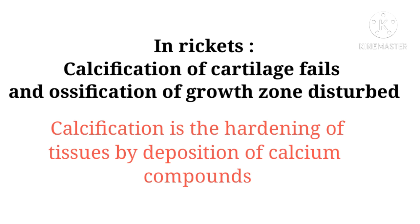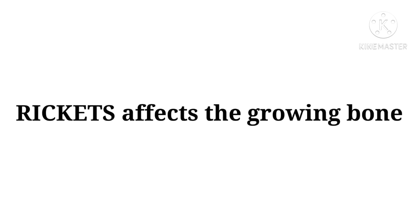The next point is that ossification of the growth zone is disturbed. When there is no calcification — no deposition of any kind of mineral — the growth of that part of cartilage which doesn't have any calcium or material is disturbed. There is no growth. Ricketts affects the growing bones because calcification and minerals help in the growth of bones. When cartilage fails to calcify, there is no growth of any bone. This is the symptom of Ricketts.